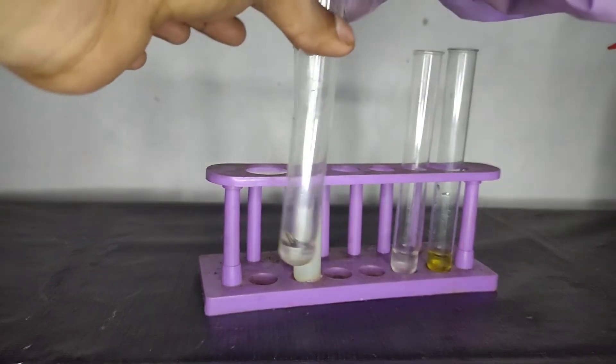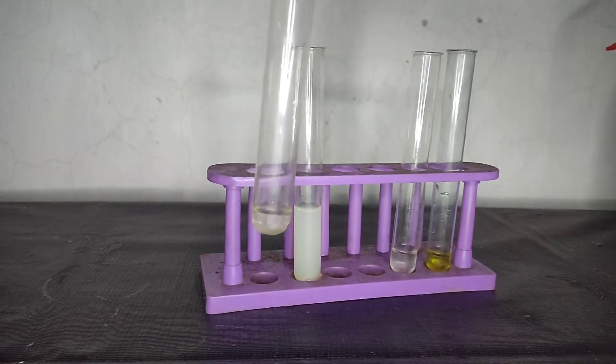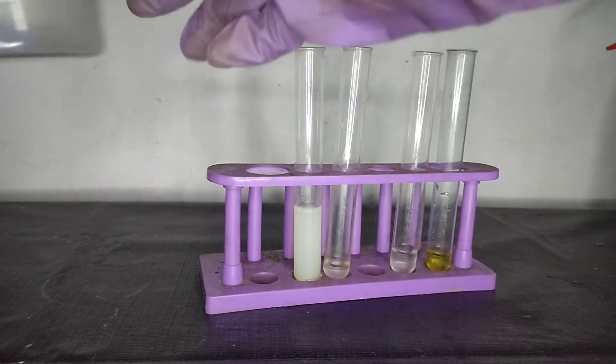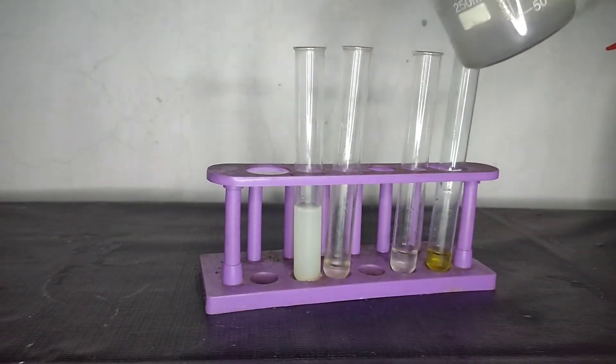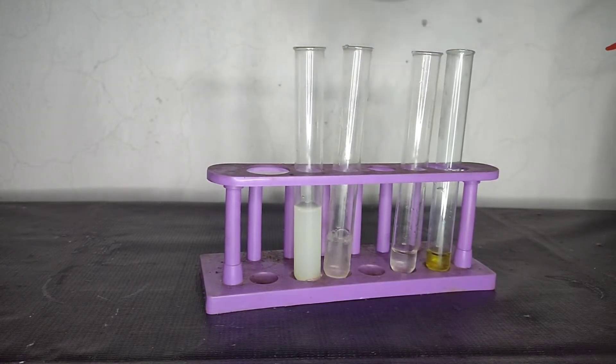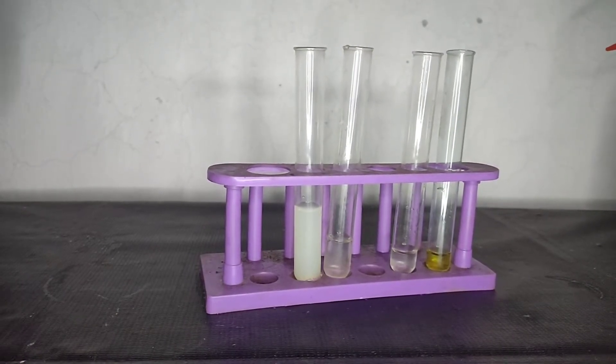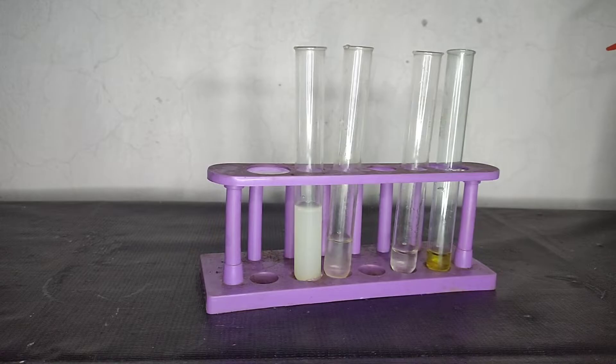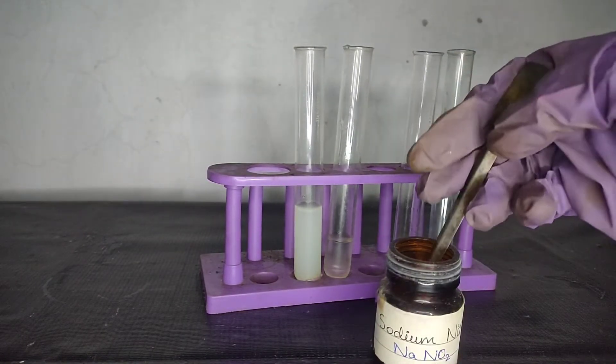Take some amount of soda extract. To this, add some starch solution. So over here, I have some starch solution. Now to this, add sodium nitrite. So over here, I am adding some sodium nitrite into it.